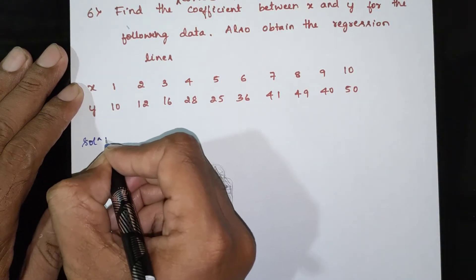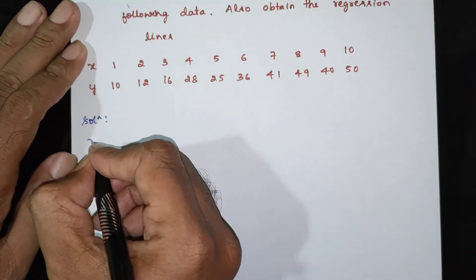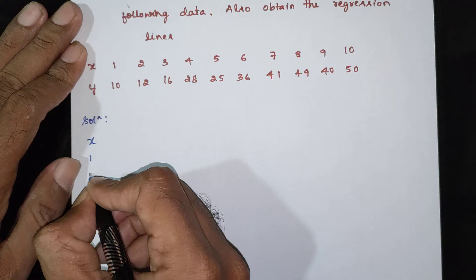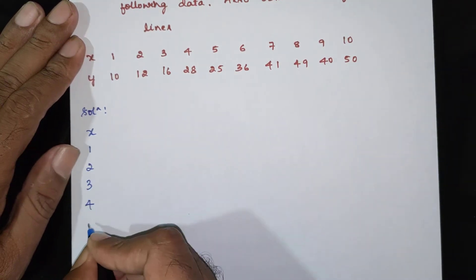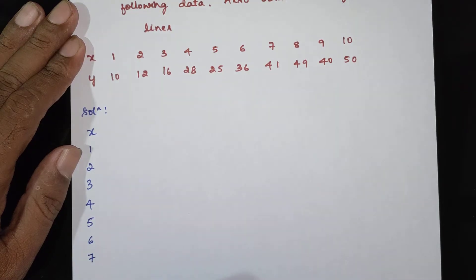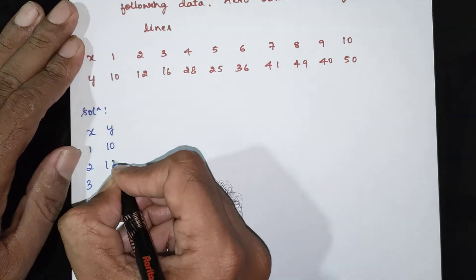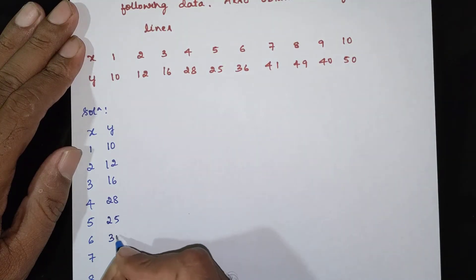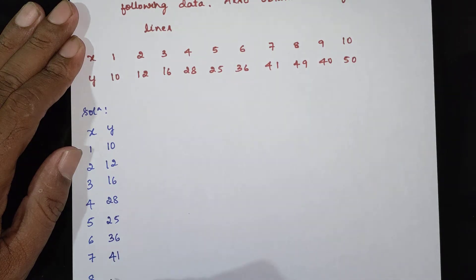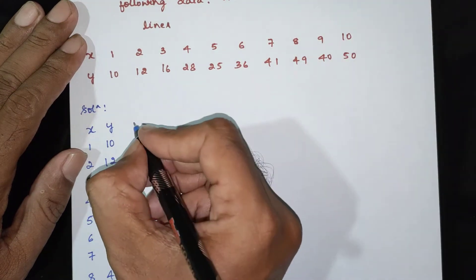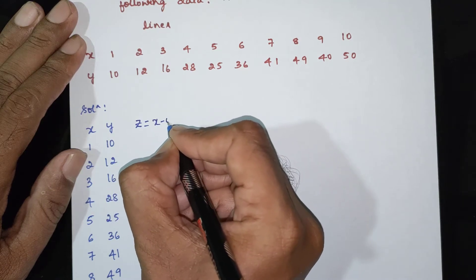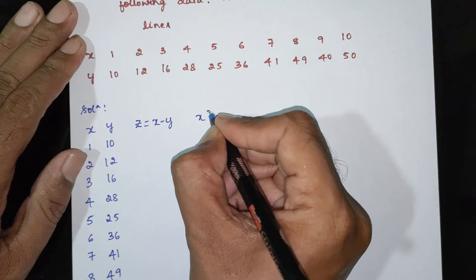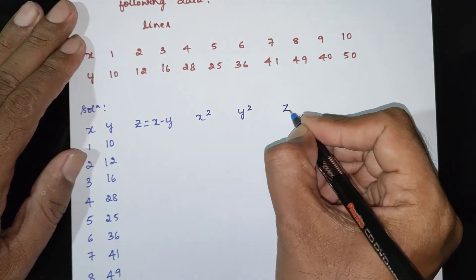Solution. The x values are 1, 2, 3, 4, 5, 6, 7, 8, 9, 10. The corresponding y values are 10, 12, 16, 28, 25, 36, 41, 49, 14, 15. The columns are z = x minus y, x square, y square, z square.